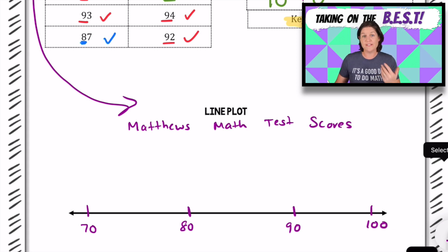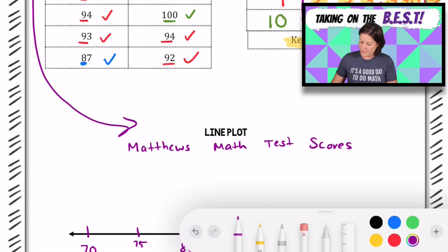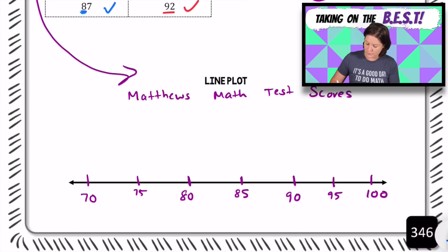So we have 70, 80, 90, and 100. Go ahead and try to make those as evenly spaced out as you can. So now what we're going to do is place halfway points here. So right here, we would have 75. Halfway between 80 and 90 would be 85. And halfway between 90 and 100 would be 95.